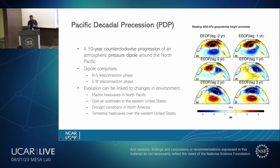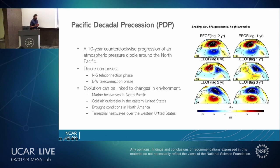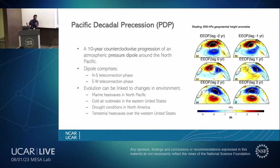These different phases of Pacific Decadal Precession, or PDP, have been linked to changes in environment, such as marine heat waves in the North Pacific, cold air outbreaks in the eastern United States, drought conditions in North America, and terrestrial heat waves over the western United States. Kuroshio Extension has a decadal variability, and PDP, as its name says, also has a decadal variability. So people have asked whether Kuroshio Extension has something to do with PDP, because they are both in the same oceanic basin and atmospheric region.